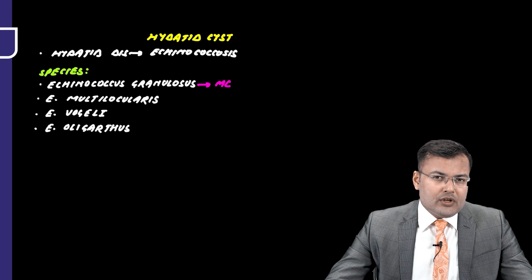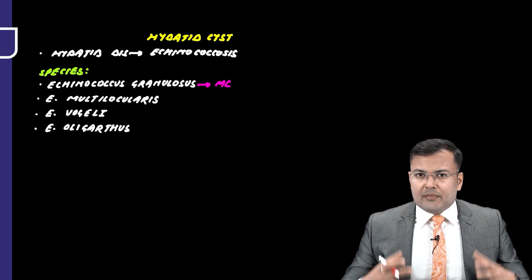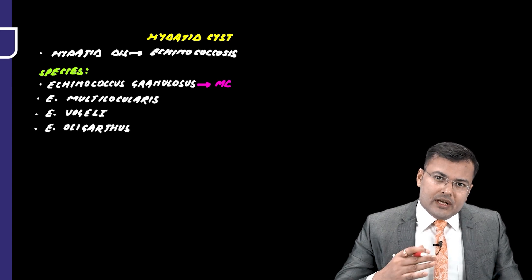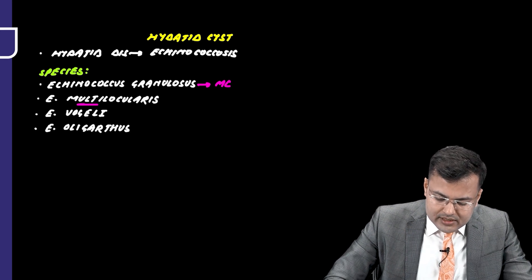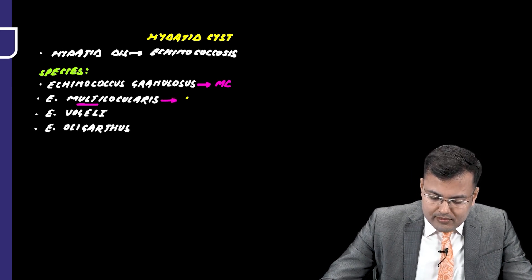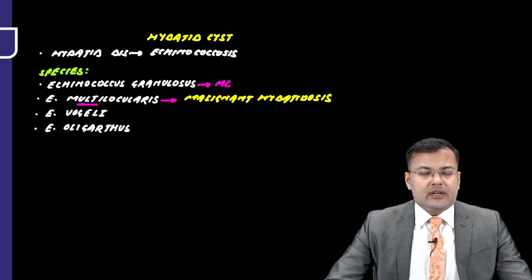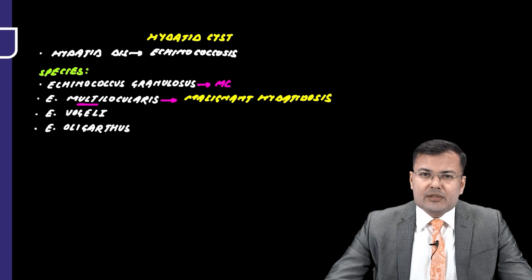The second species is Echinococcus multilocularis. A recent exam question asked which species is responsible for malignant hydatidosis — the condition in which multiple organs are involved and multiple cysts are present in one organ. The answer is Echinococcus multilocularis. A memory tip: 'multi' = multiple organs, multiple cysts. Other species include Echinococcus ojeli and Echinococcus oligarthus.